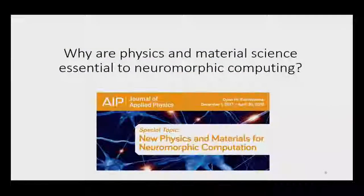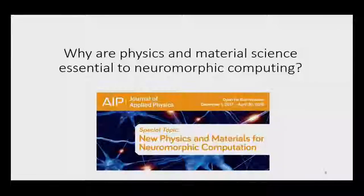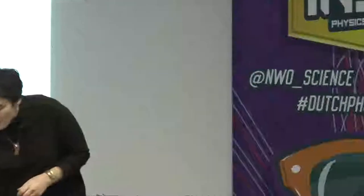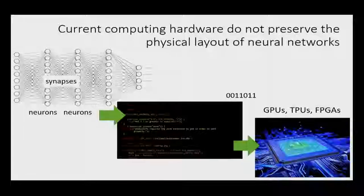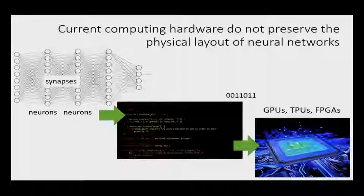Knowing this, why are physics and material science really important for neuromorphic computing? The answer is simple: our current electronics is not going to be enough to implement these chips very efficiently.